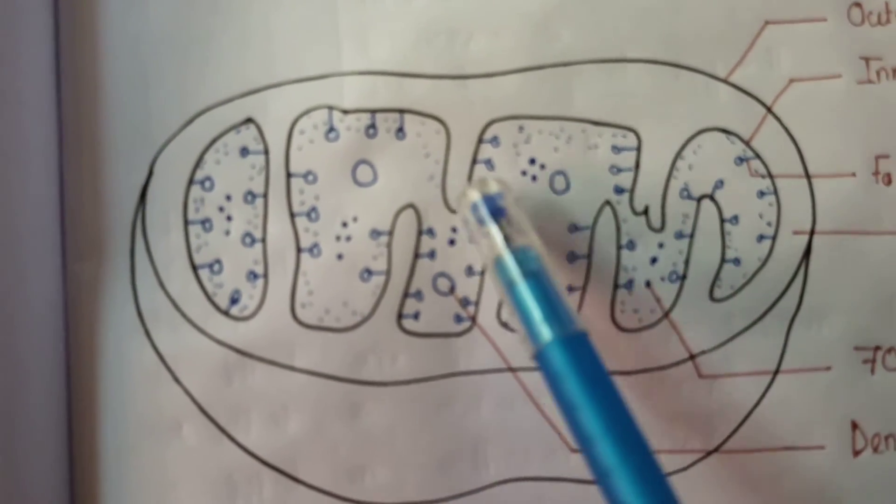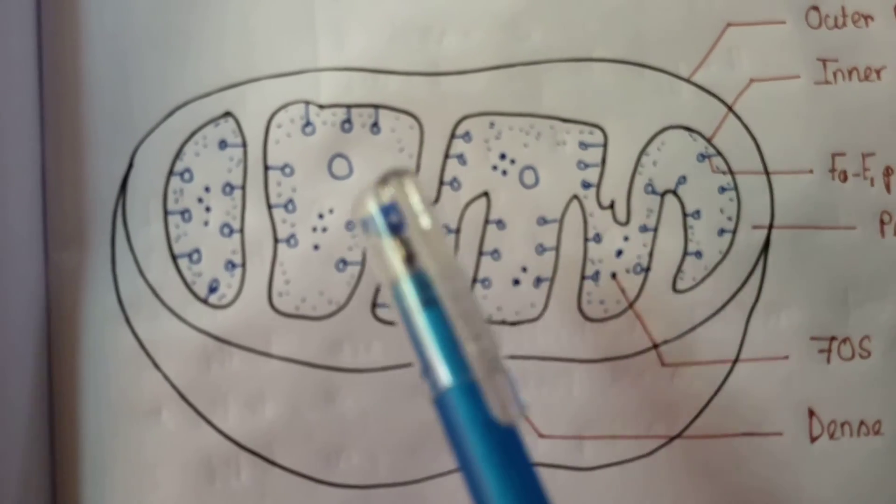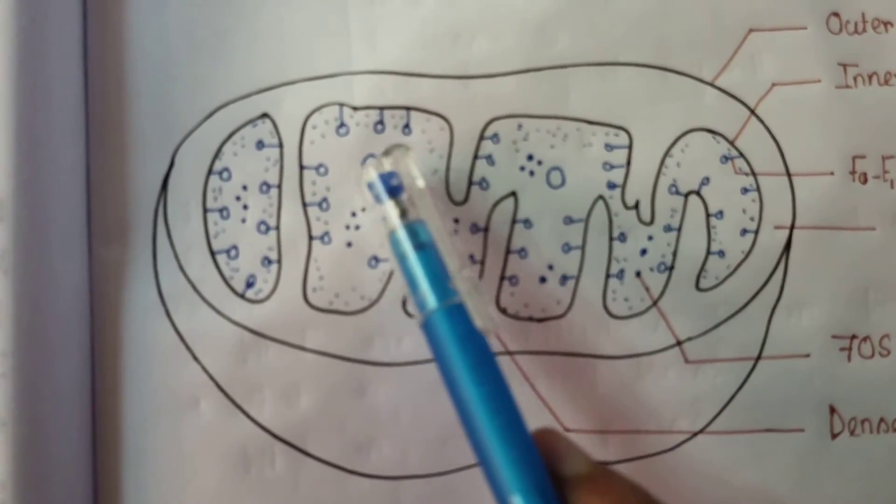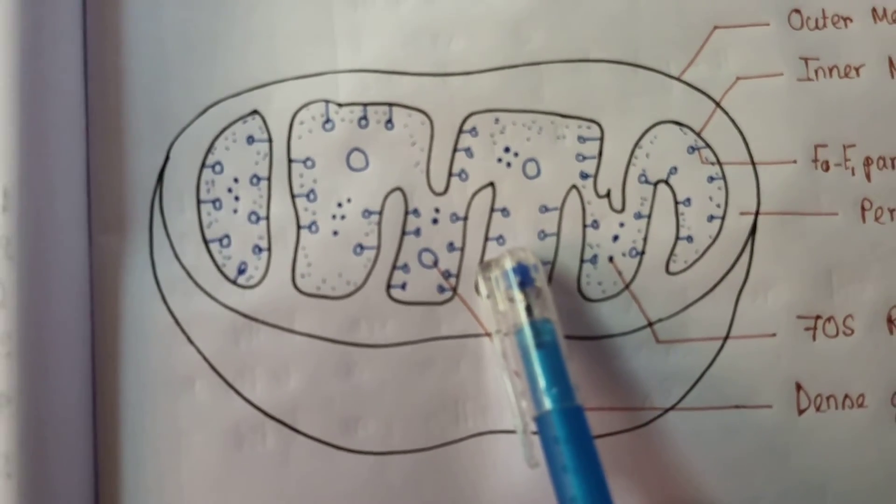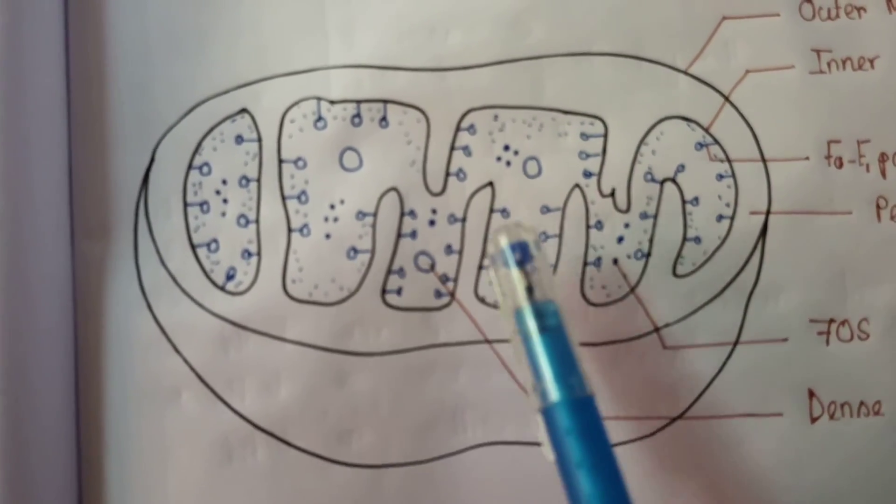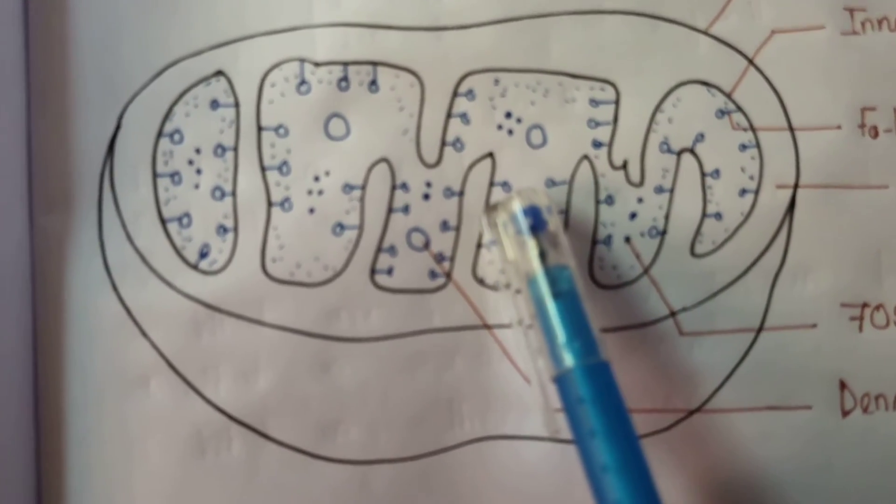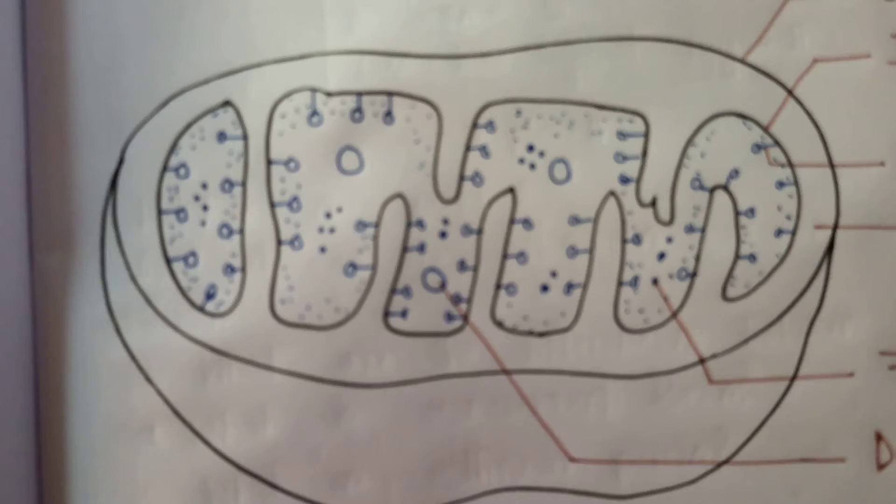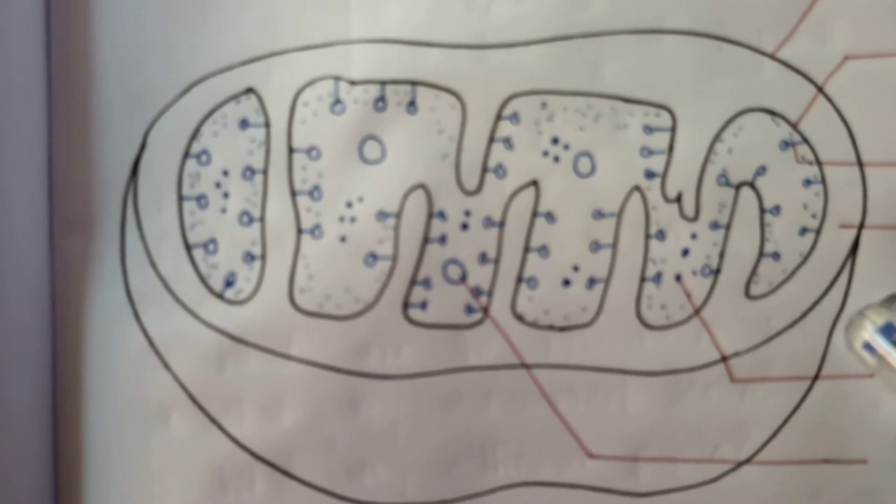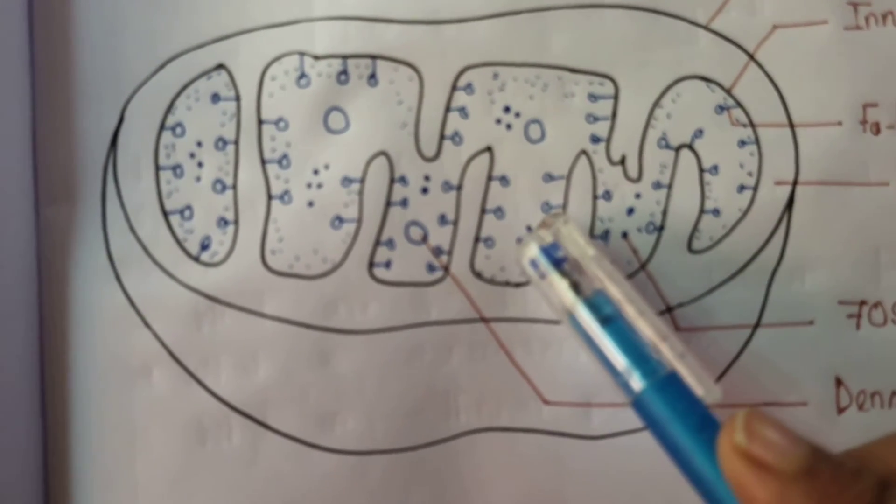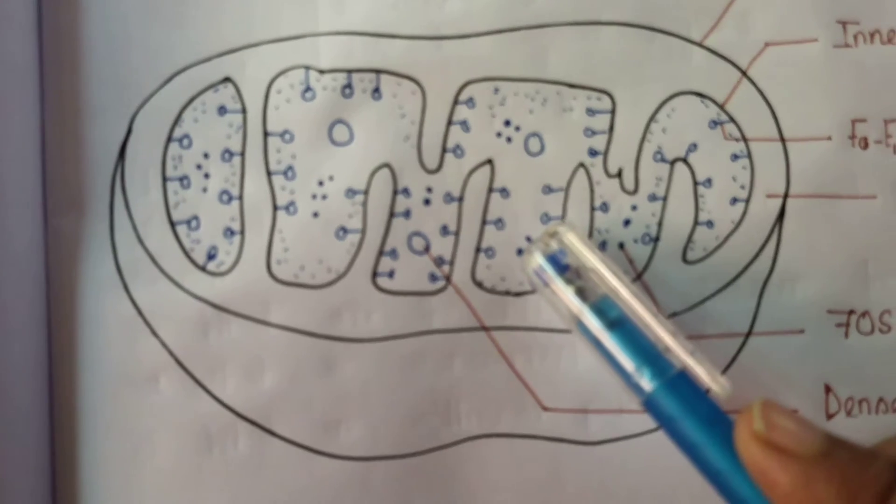There are tennis racket-type structures called F0-F1 particles involved in ATP synthesis, dense granules, and 70S type ribosomes within the inner membrane compartment. The matrix also contains a circular type of DNA which is naked, similar to that found in bacterial cells.